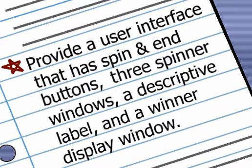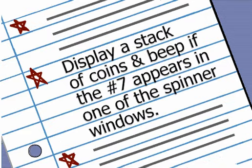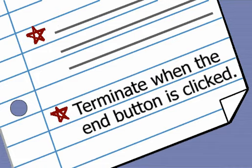First, it should display a welcoming user interface with control buttons, spinner windows, and a mechanism for announcing a win. Second, it should have the ability to pick three random numbers and display them in the spinner windows when the user clicks spin. Third, Lucky Seven should announce a jackpot by displaying a stack of casino coins and beeping when a seven appears. Finally, Lucky Seven should stop when the user clicks the end button.